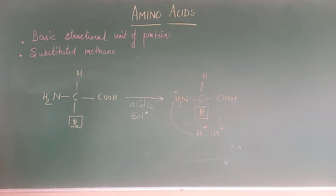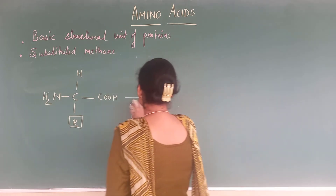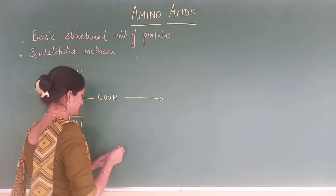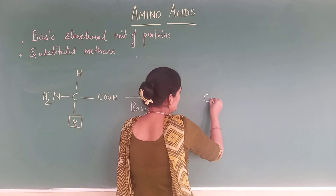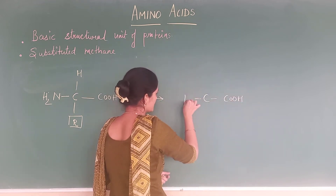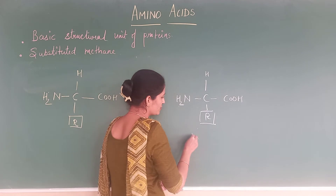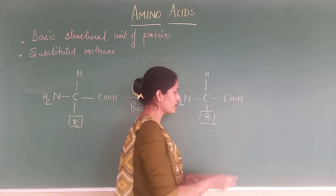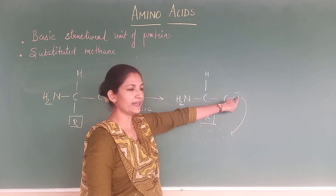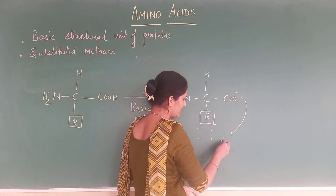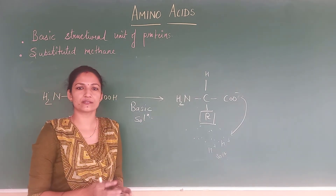If the solution is basic — if we put these amino acids in a basic solution — then what is going to happen? The structure shows COOH, NH2, R, and H. The basic solution is going to take the protons, the H+ ions. So when H+ ions are given out, a negative charge appears on the carboxyl group. This will now become COO negative, and H+ goes into the solution. So these are the two conditions where these ions exist.